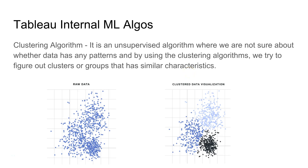Welcome to the next video. In this video I will talk about Tableau's internal machine learning algorithm. One of the very first algorithms we will see is the clustering algorithm. It is an unsupervised algorithm where we are not sure about whether data has any patterns, and by using clustering algorithms we try to figure out clusters or groups that have similar characteristics.